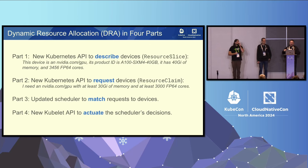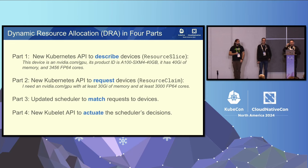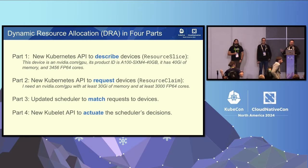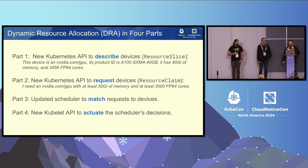Part one is how you describe the devices, part two is how you request them. We also changed the algorithm so that the choice of which devices get assigned to your pod is done in the scheduler rather than in the driver on the node. Device plugin makes that decision on the node; DRA makes that decision in the scheduler, which allows us to add additional logic and scoring to satisfy underspecified requests. And part four is we have to actually actuate this — plumb the devices into the pods and containers — which requires a new API on the node side.